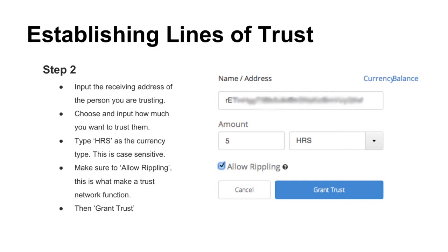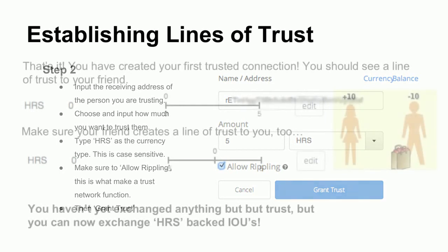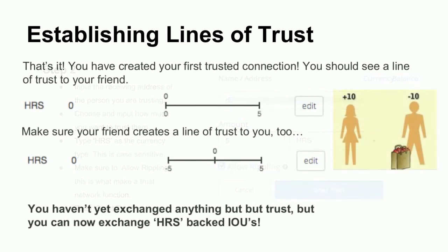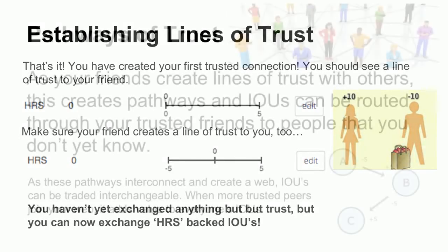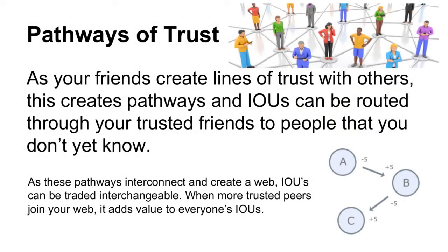Once you establish a line of trust, you have a positive 5-hour balance — a trust line with your friend. Make sure your friend creates a line of trust back to you, creating a negative 5-hour and plus 5-hour balance, so you can exchange back and forth. If I give you an IOU for 2 hours, you would have a positive 2-hour balance and I would have a negative 2-hour balance. I have the obligation to get back to zero. You can use that 2 hours of my IOU with anyone else in our trust network. As your friends create lines of trust with others, this creates pathways, and IOUs can be routed through your trusted friends to people that you don't know yet. As these pathways interconnect and create a web, IOUs can be traded interchangeably.